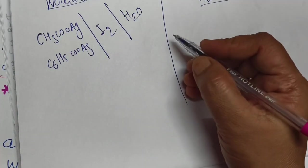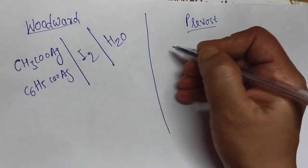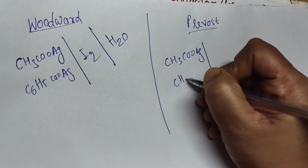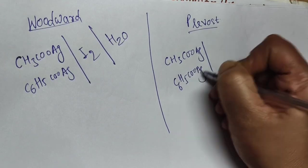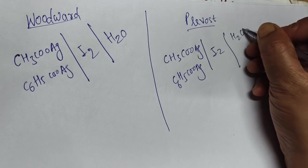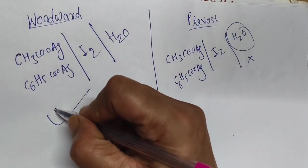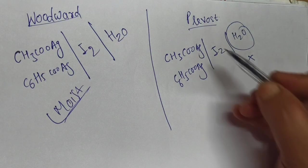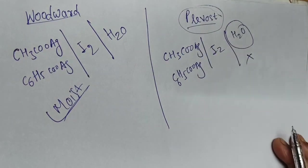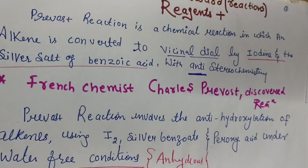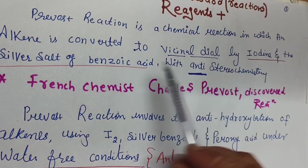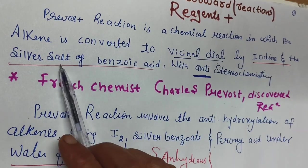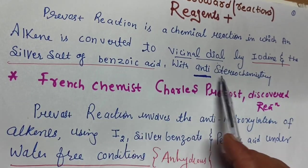They are almost similar but a little bit different. In the Prévost reagent, it is a combination of silver acetate or silver benzoate (C₆H₅COOAg) along with iodine, but water is not required. The Prévost reaction takes place under anhydrous conditions. The Prévost reaction is a chemical reaction in which an alkene is converted to vicinal diols by iodine and the silver salt of benzoic acid with anti-stereochemistry.